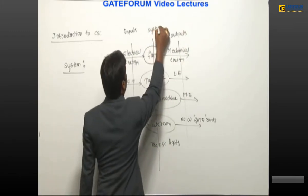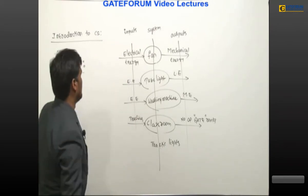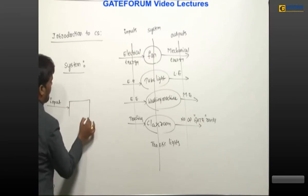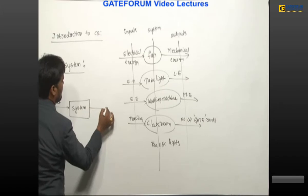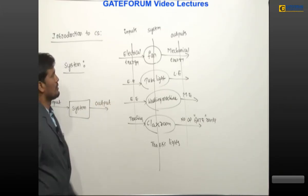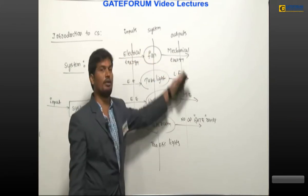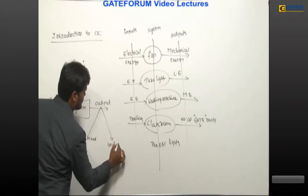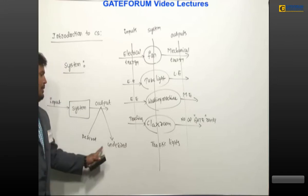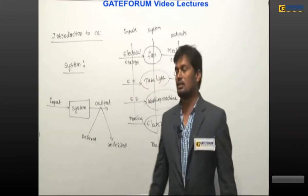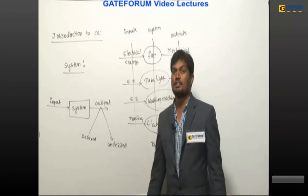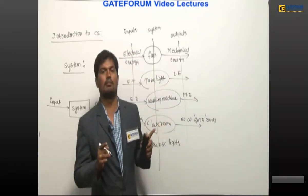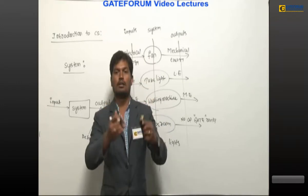The general block diagram is: input to the system, then system, then output. Output of the system may be desired or may be undesired. The basic definition of system: a combination of physical components connected together to perform a certain task is called a system.